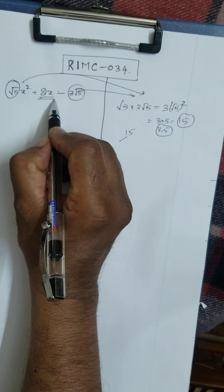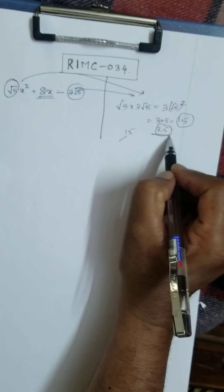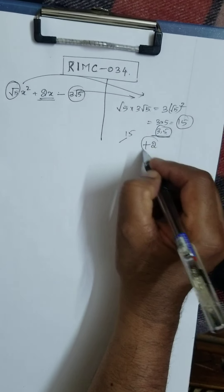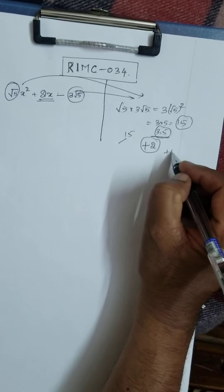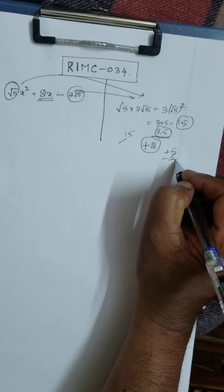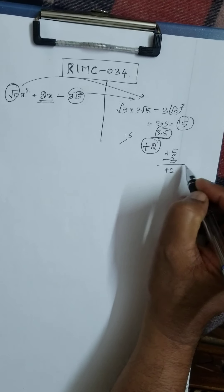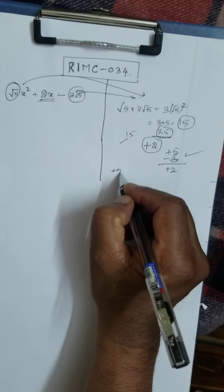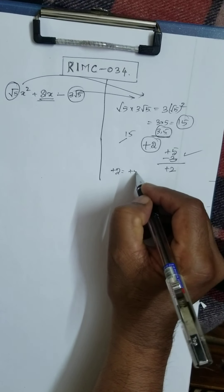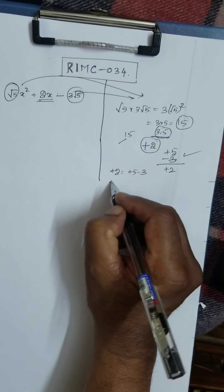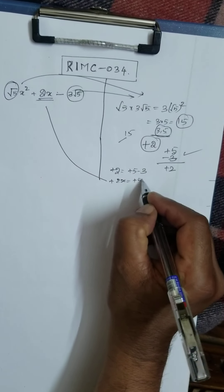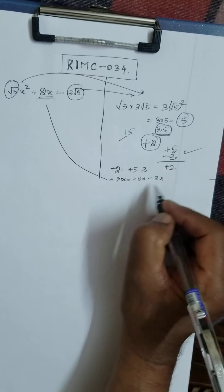Now here 2x is there. How to get 2 out of 3 and 5? You want plus 2. Out of these, therefore plus 5 minus 3 gives you plus 2. This combination is correct. Therefore +2 is equal to +5 minus 3, or you can write +2x equal to +5x minus 3x.